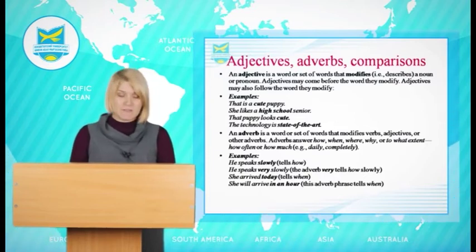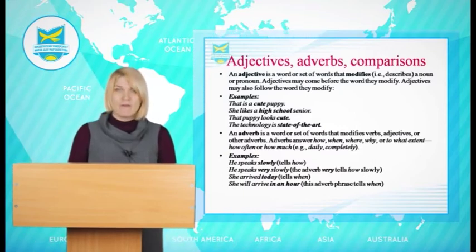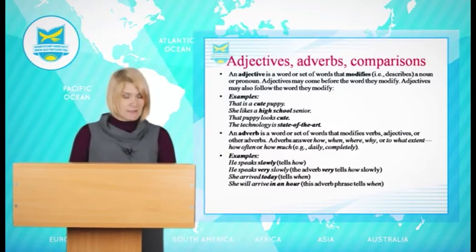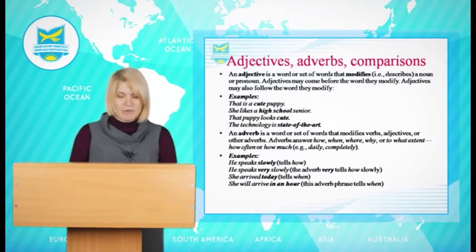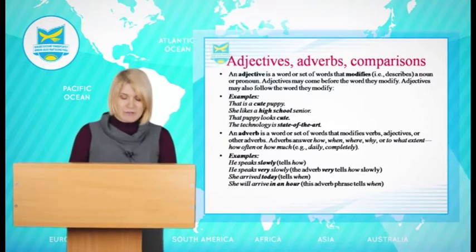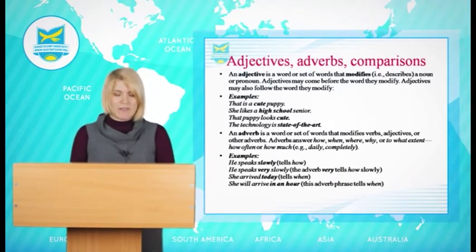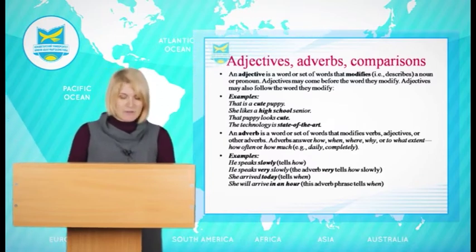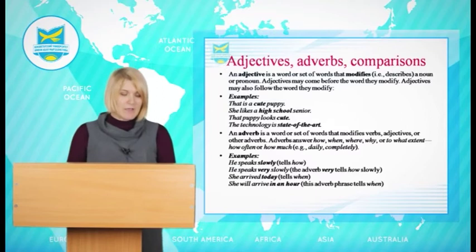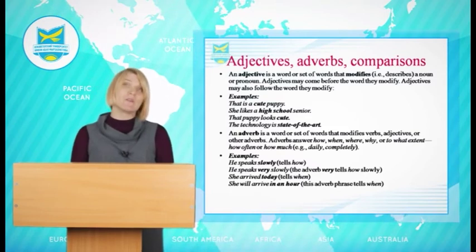If there is more than one adjective before a noun, there is a most common order: firstly opinion, secondly size, then other qualities — age, shape, colour, origin, material and type. We don't usually use commas between adjectives before a noun. For example: an ugly concrete building, a tiny round brass button, a difficult new theory. If there are two adjectives of the same type before the noun, we can join them with AND.